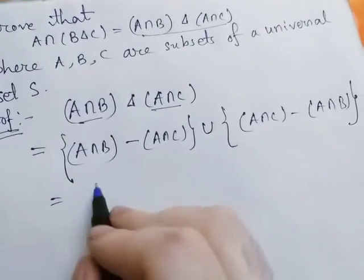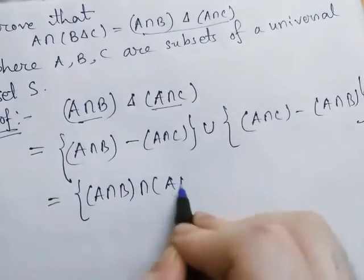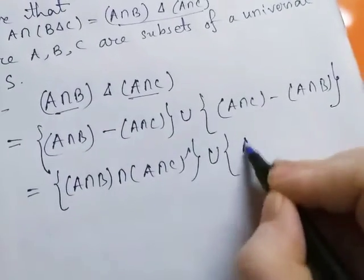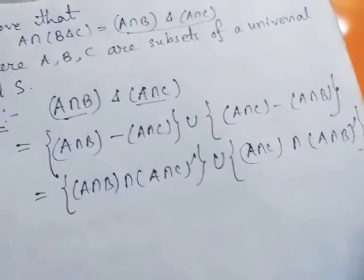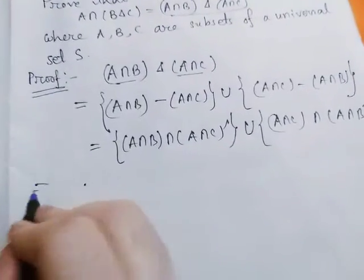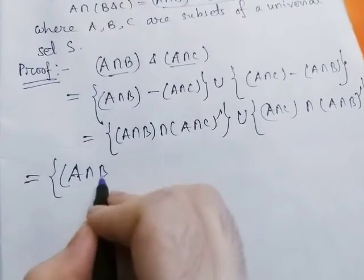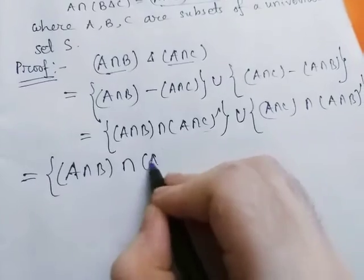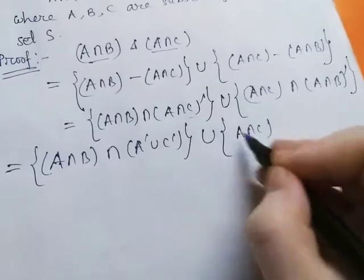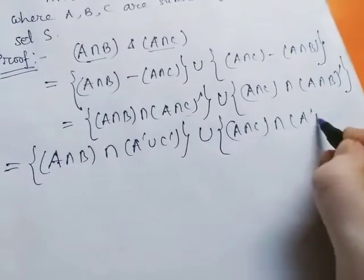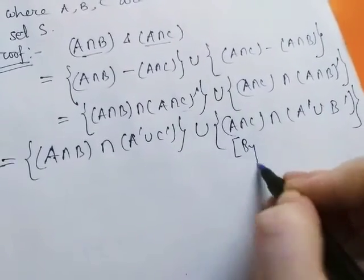Now we can write A minus B as A intersection B complement. So this will be A intersection C whole complement union A intersection B whole complement. Using De Morgan's law, we can write this as A intersection B intersection A complement union C complement, and this will be A complement union B complement by De Morgan's law.